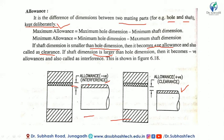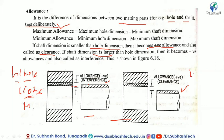The main difference: maximum allowance is the higher limit of the hole minus the lower limit of the shaft. Minimum allowance is the lower limit of the hole minus the higher limit of the shaft. These give us the maximum and minimum allowance values.